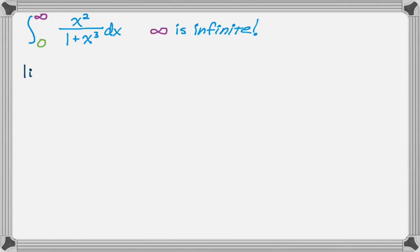So let's write a limit. So it's the limit as B approaches infinity, of 0 to B, and then x squared over 1 plus x cubed dx. So I'm going to integrate this. This looks like a natural log to me.